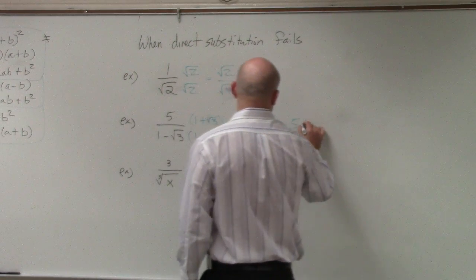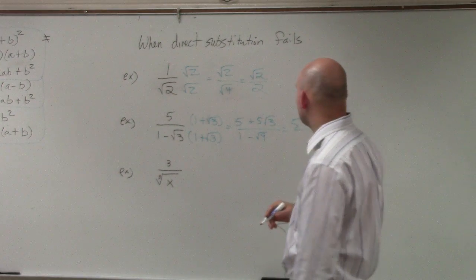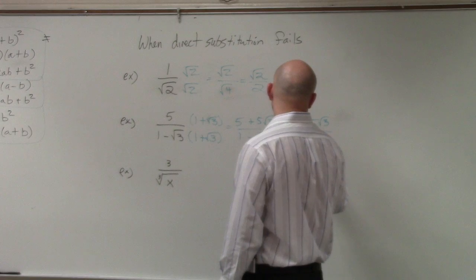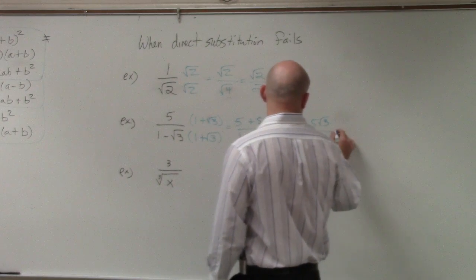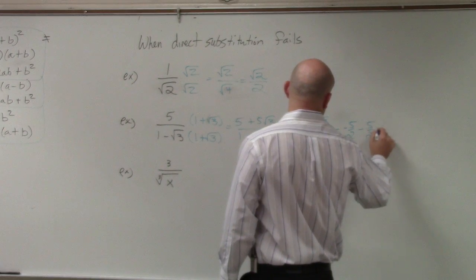So I have 5 plus 5 square root of 3 over 1 minus 3. 1 minus 3 is going to be a negative 2. And you could also simplify that to a negative 5 halves minus 5 halves square root of 3.